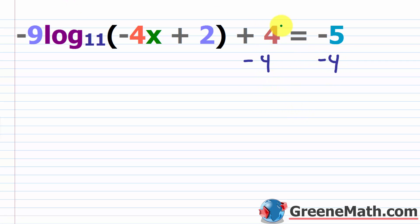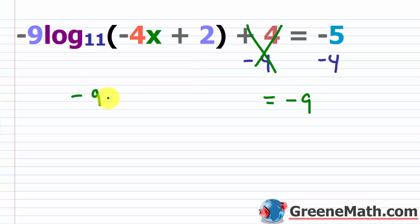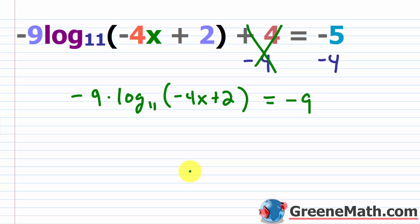That 4 would cancel over here. On the right side, I would now have negative 9, because negative 5 minus 4 would be negative 9. On the left side, I would have negative 9 times log base 11 of negative 4x plus 2. So from here, notice how you have this negative 9 multiplying this log base 11 of negative 4x plus 2.